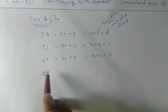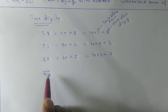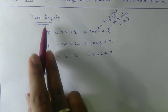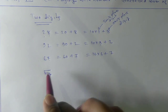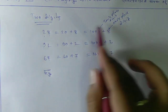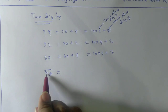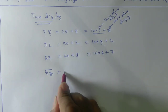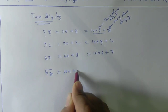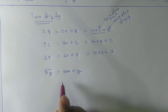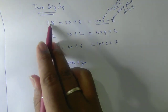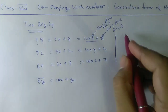We write a two-digit number as XY̅ — don't get confused; this is just the presentation of a two-digit number. To express it in general form: X is the tens place digit and Y is the ones place digit, so we write 10X + Y.